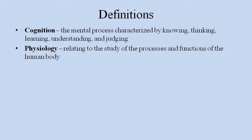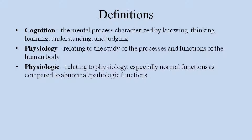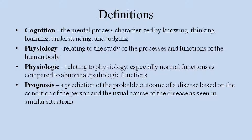The second definition is physiology — relating to the study of the processes and functions of the human body. The third definition is physiologic, relating to physiology, especially normal functions as compared to abnormal pathologic functions. The fourth definition is prognosis: a prediction of the probable outcome of a disease based on the condition of the person and the usual course of the disease as seen in similar situations.